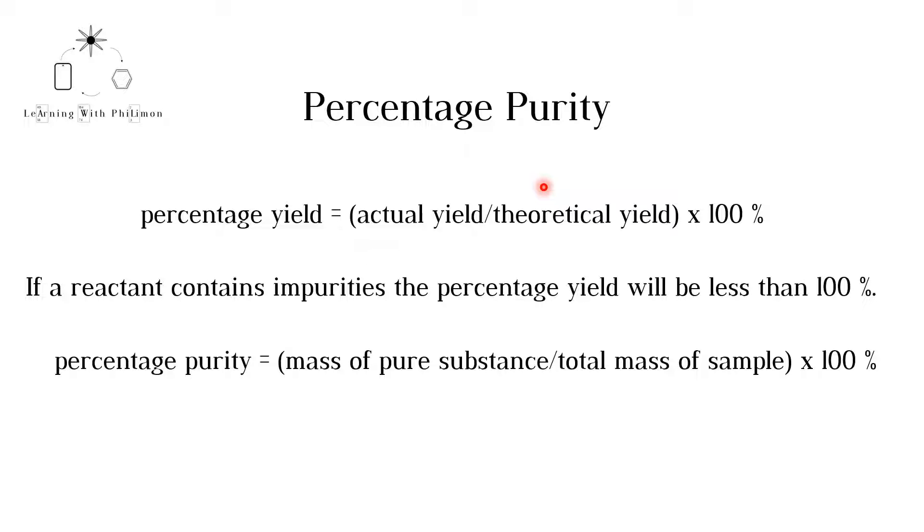One of the reasons for a lower yield could be that a reactant contains impurities. The impurities in the sample do not react to form the desired product, so you cannot make the maximum amount of desired product. Note that the impurity may react to form another product or not react at all.